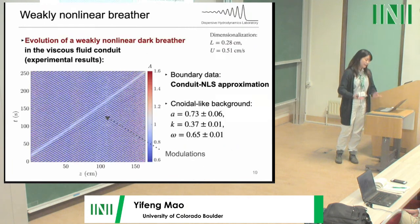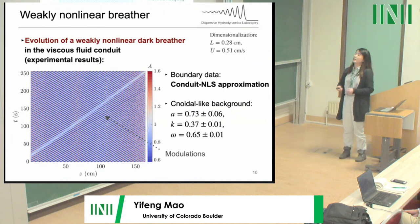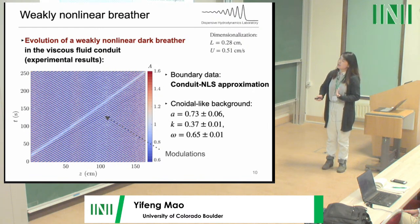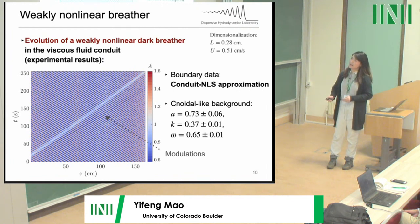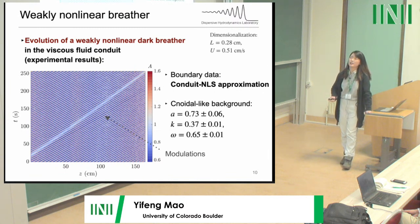Now we are ready to generate breathers in the physical system. This contour plot shows our experimental data in the weakly nonlinear regime. There is a dark breather — shown as a brighter color indicating a depression type — with the x-axis as vertical space and y-axis as time, traveling in the positive z-direction. This weakly nonlinear breather was generated using the conduit NLS approximation as the boundary data. We also see some modulations on the carrier background.